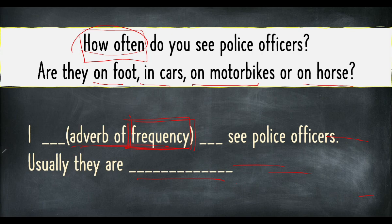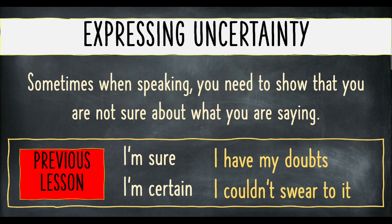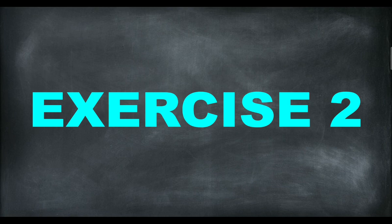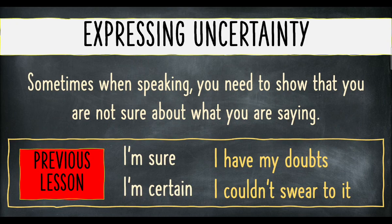We are going to move on to exercise number two. For exercise number two, the focus is on expressing uncertainty — ketidakpastian. Because sometimes when you speak, you need to show that you are not sure about what you are saying, because we don't know everything. There are things that we don't really know, but we think it is so.